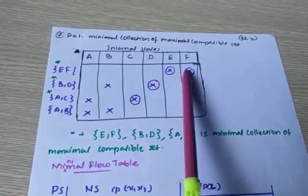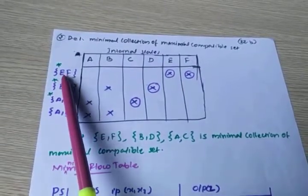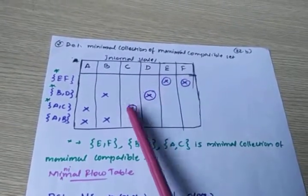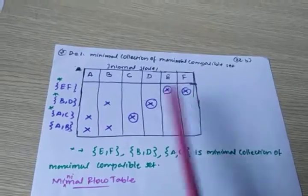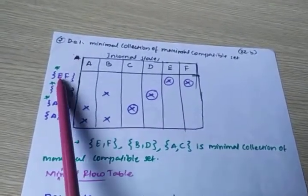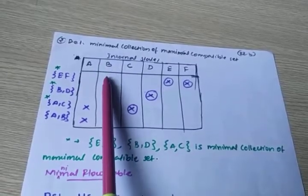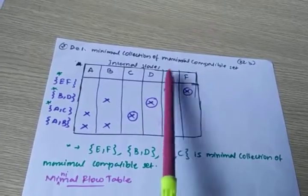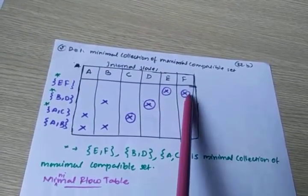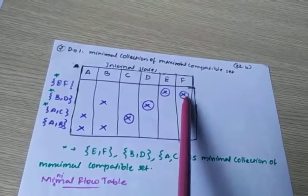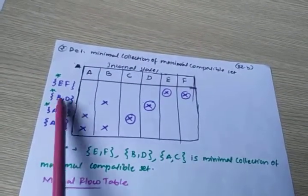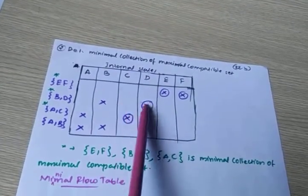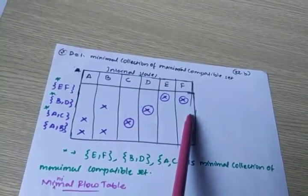Now scan each and every column. For the {E,F} column, wherever E or F appears in the row, you put a cross mark. At this stage, don't consider the circles — only consider the cross marks. Checking through the states: E is found, so put a cross mark; F is found, so put a cross mark. For the {B,D} column, check for B and D. D is found, so the {B,D} combination gets a cross mark.